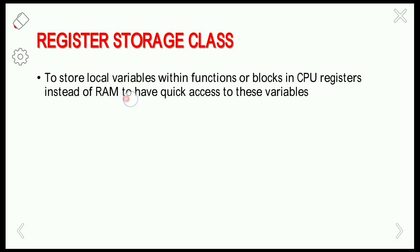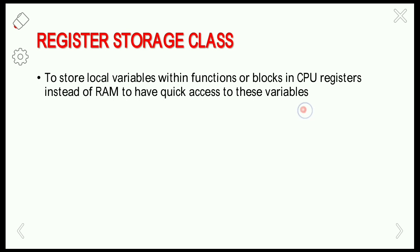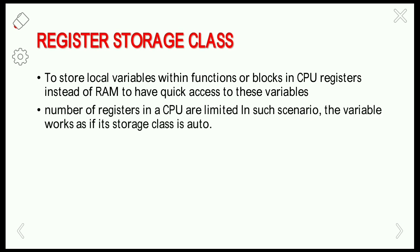That's why we store local variables or functions in the CPU registers instead of RAM, to access the variables quickly. The registers are very fast but have limited storage space, whereas memory has more storage space but is a little bit slower compared to registers.